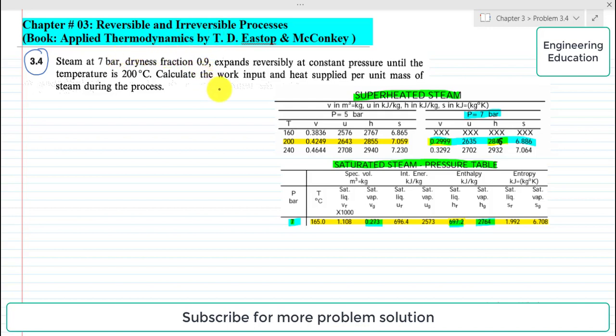The statement of the problem is: steam at 7 bar, dryness fraction 0.9, expands reversibly at constant pressure until the temperature is 200 degrees Celsius. Calculate the work input and heat supplied per unit mass of steam during the process.